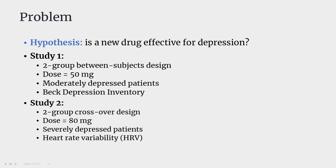For our second study, it's also a two-group study but it's a crossover design, meaning patients receive both the placebo and the drug. Half receive the placebo first and then the drug; the other half receive the drug first and then, after a washout period, get the placebo — so this is a within-subjects design. Study two uses 80 milligrams in severely depressed patients, and the outcome is heart rate variability, a physiological biomarker of depression. Perhaps study one was conducted in the UK and study two in Japan. We want to combine the results, but these studies are quite different — and that's the problem.